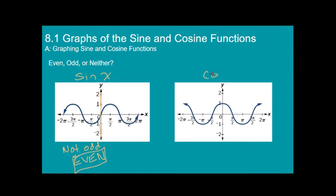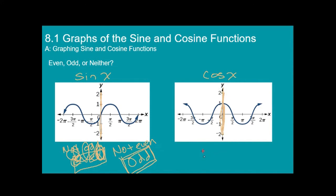Now let's look at the cosine graph. If we reflect it across the y-axis, do we have the same graph? Yes, we do. So cosine is an even function. Sorry — I got that backwards a moment ago; that's where in class you would have stopped me. So to be clear: cosine is even because reflecting across the y-axis gives the same graph. When we get to tangent — which we're not doing today — tangent will be neither. So we have one of each type among the basic trig functions.